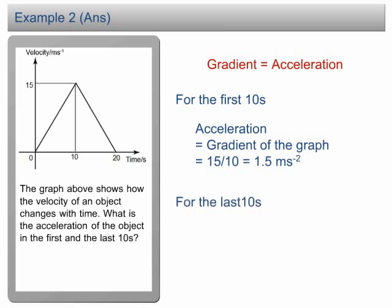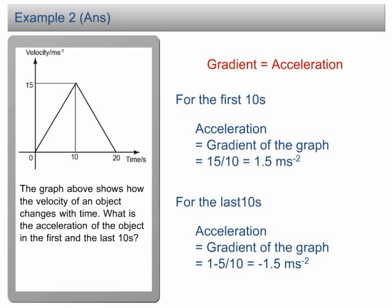From 10 seconds to 20 seconds, the gradient is equal to negative 15 over 10, equal to negative 1.5. Therefore, the acceleration for the last 10 seconds is negative 1.5 meters per second squared. The acceleration can be determined directly from the gradient of the graph. However, we need to be cautious about the positive and negative value of the gradient.